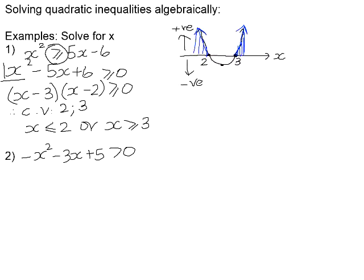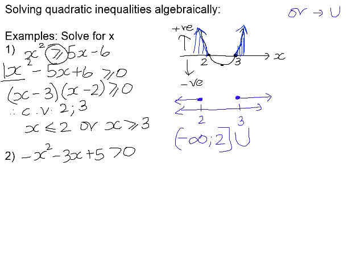Sometimes you are asked to represent your final solution on a number line, sometimes in interval notation — I'm going to show you both. On a number line, we have positive 2 and positive 3. We want a closed dot above 2 with an arrow to the left, and a closed dot above 3 with an arrow to the right. In interval notation, all numbers less than or equal to 2 go from negative infinity to 2 with a square bracket, in union with 3 to positive infinity. Remember: 'or' is the union of two sets (represented by ∪) and 'and' is the intersection (represented by ∩).